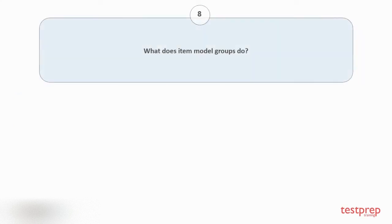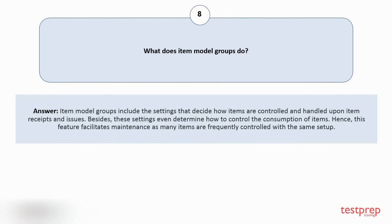Question number 8: What does item model groups do? Item model groups include the settings that decide how items are controlled and handled upon item receipts and issues. Besides, these settings even determine how to control the consumption of items. Hence, this feature facilitates maintenance as many items are frequently controlled with the same setup.